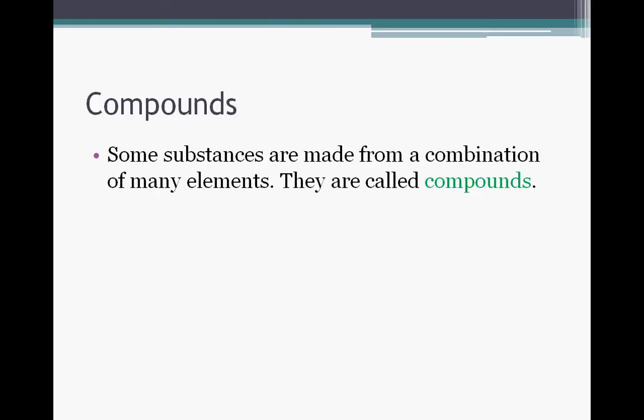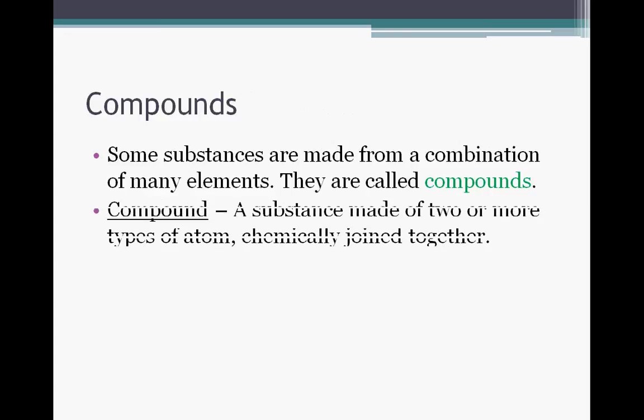Compounds. Now some substances are made up of a combination of many elements. They are called compounds. A compound is a substance made of two or more types of atoms chemically joined together. In other words, when two different elements that have their own different properties join together chemically and become a new substance, that is a compound.